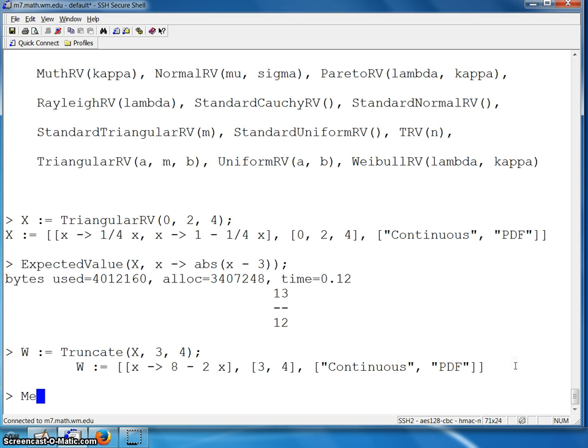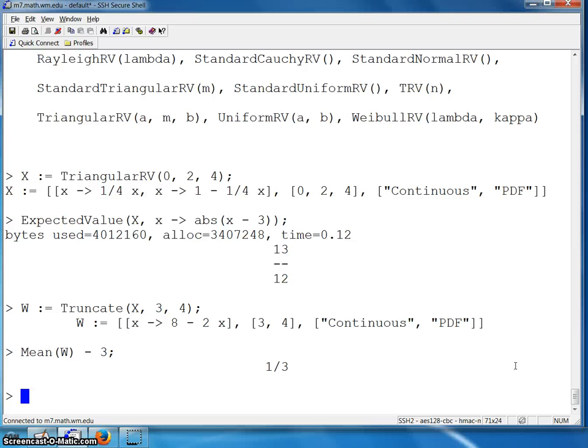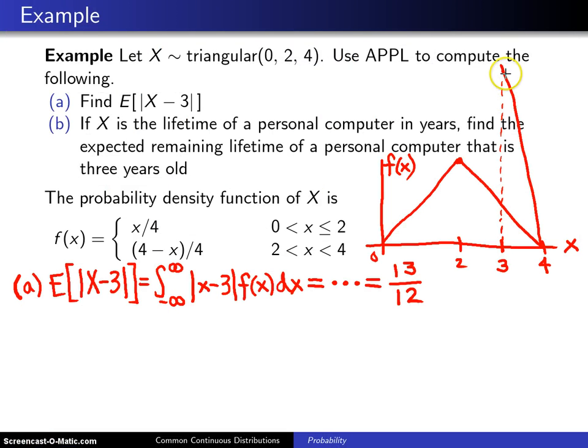Finally, the last thing we want is we want the mean of W. And since we want the expected remaining life, we put in a 3 here, subtract out 3. And what this says is that personal computer will have one-third of a year left on its lifetime. So finally, the expected remaining lifetime of a computer that has been used for 3 years and is still operating is one-third. So that is the solution to part B.